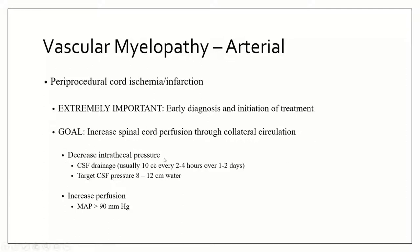To decrease intrathecal pressure, you can do CSF drainage. Neurosurgeons can place a CSF drain — the recommended rate is about 10 cc's every two to four hours, continued for about one to two days. Target pressures between 8 and 12; going below 8 risks over-draining CSF. The other approach is to augment MAP — target maps above 90. You can use fluids or pressors, for example phenylephrine, to augment blood pressure and hopefully improve perfusion into the spinal cord.